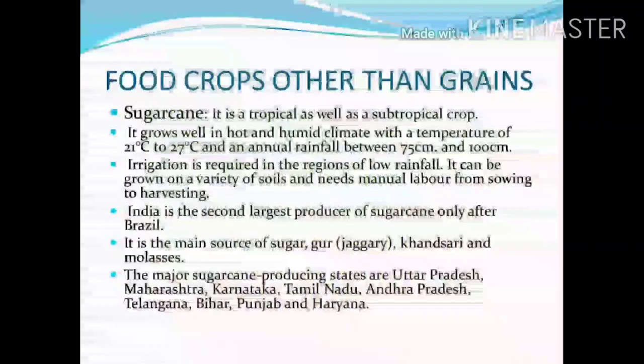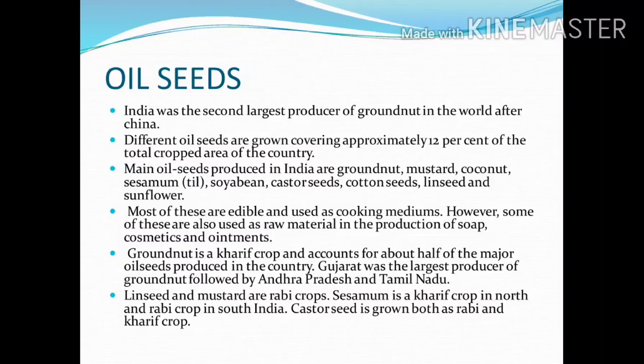Let us see oilseeds. India is the second largest producer of groundnut in the world after China. Different oilseeds are grown covering approximately 12% of the total cropped area of the country. Main oilseeds produced in India are groundnut, mustard, coconut, sesame, till, soya bean, castor seeds, cotton seeds, linseed, and sunflower. Most of these are edible and used as cooking medium. However, some are also used as raw material in the production of soaps, cosmetics, and ointments.